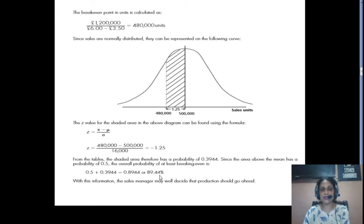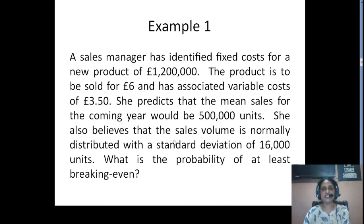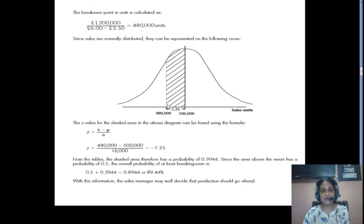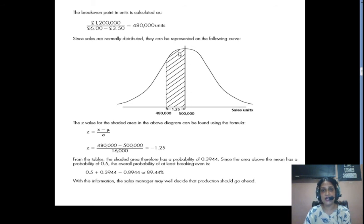The question asks: what is the probability of at least breaking even? It means you can break even at 4,80,000 at least, or have sales beyond 4,80,000. So we have to take into consideration the area from the BEP to the mean and the entire area above the mean. The area from the BEP to the mean is a distance of 0.25 standard deviations — that is, the area between 4,80,000 and 5,00,000 plus the entire right half.